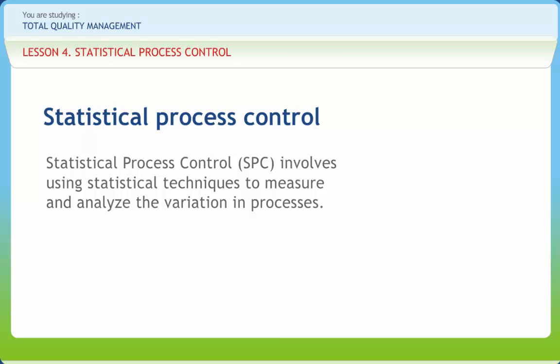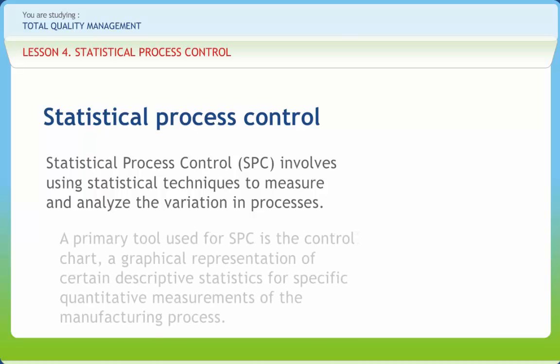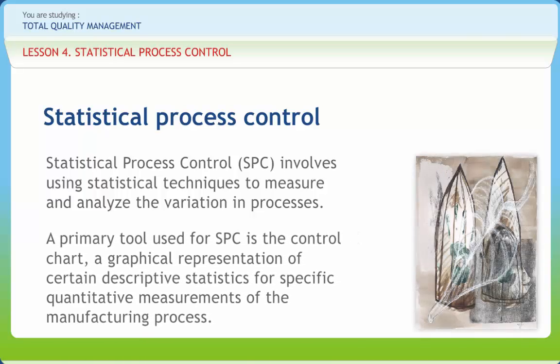No matter how good or bad the design, SPC can ensure that the product is being manufactured as designed and intended. A primary tool used for SPC is the control chart, a graphical representation of certain descriptive statistics for specific quantitative measurements of the manufacturing process.